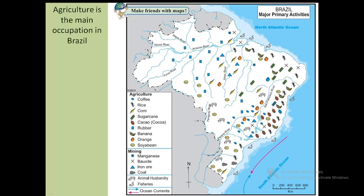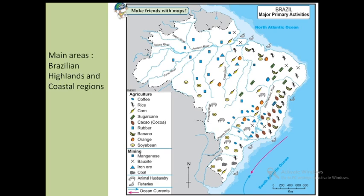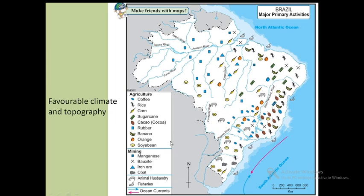Agriculture is the main occupation in Brazil. People who live in the coastal areas and in the Brazilian highlands have agriculture as their main occupation. We find variety in crops in Brazil because of the favorable climate and topography — topography meaning the physical features.